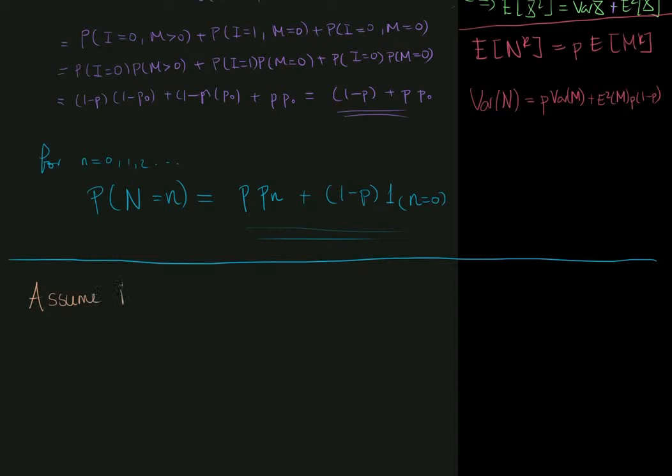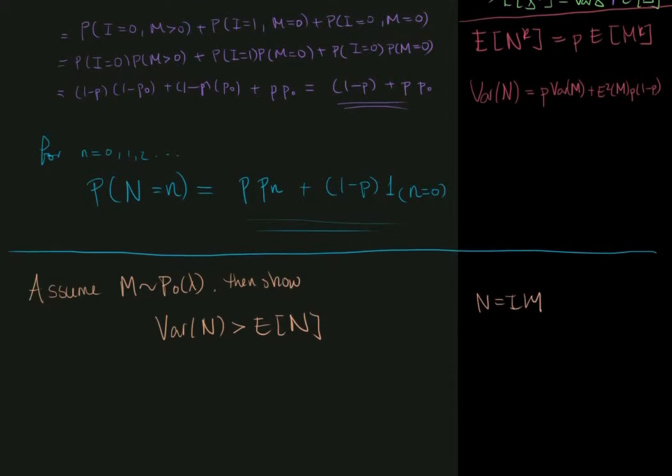Assume that m is Poisson distributed with parameter lambda. Then show that the variance of n is greater than the mean of n, where n is the zero modified version, so n equals i multiplied by m, where i is defined as we had earlier.